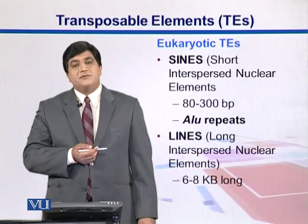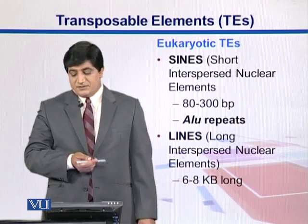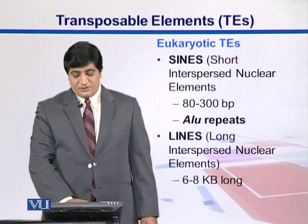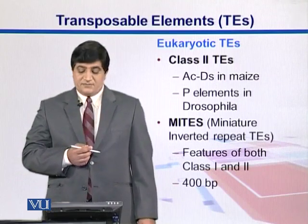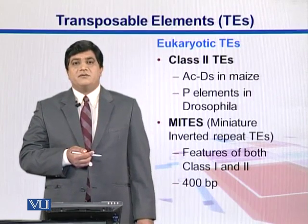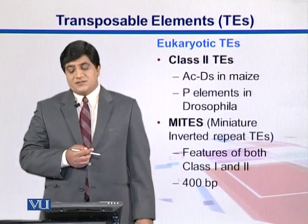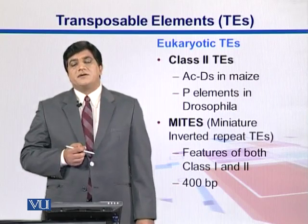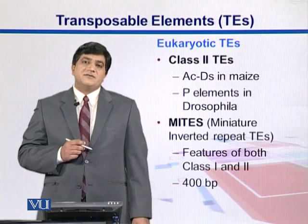SINEs are 80 to 300 base pairs; one example is ALU repeats, which are present in humans. LINEs are 6 to 8 kb — relatively longer. Examples of Class 2 transposons are Ac/Ds elements, which were studied in maize through the work of Barbara McClintock, whose research led to the discovery of these transposons. They give different characteristics and traits to the kernels in maize. Another example is P elements in Drosophila.